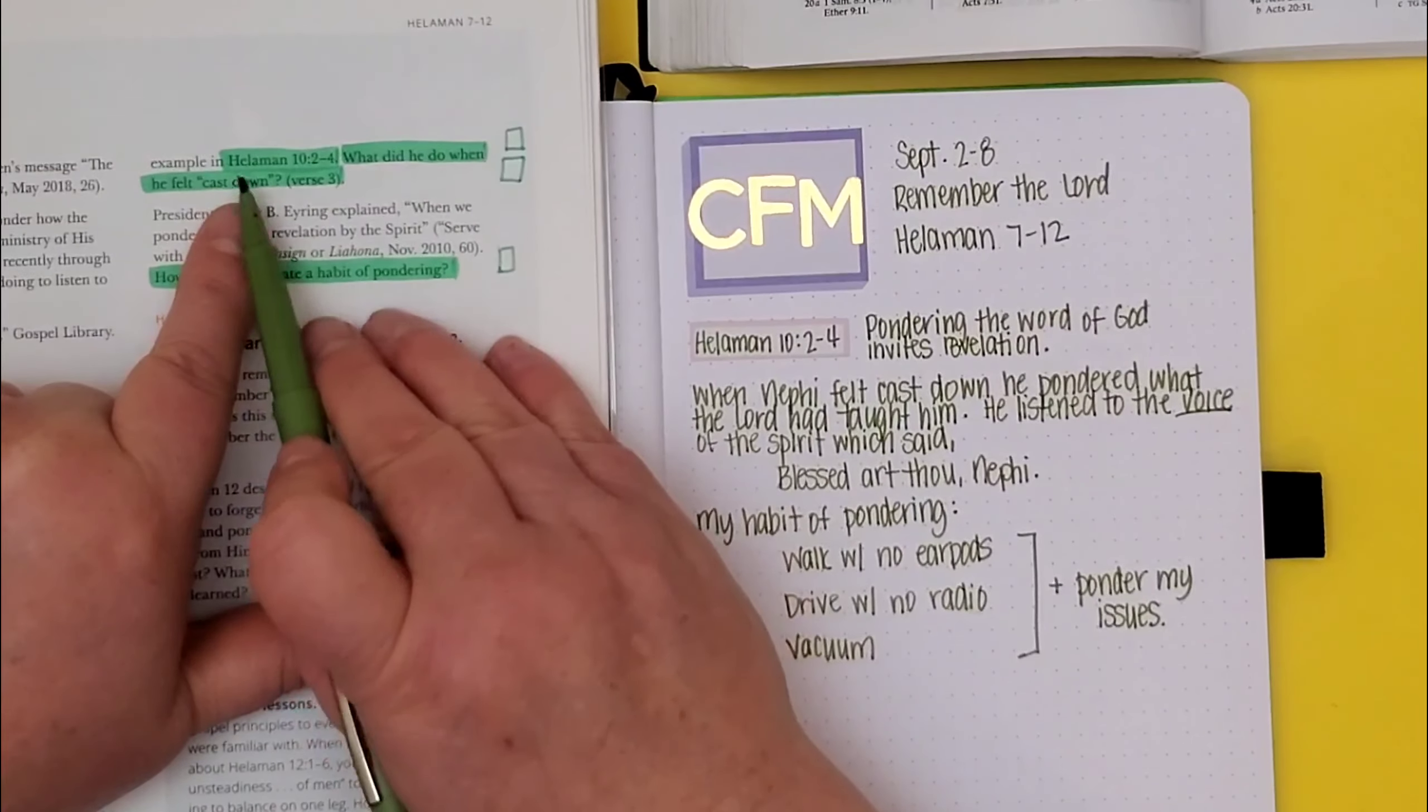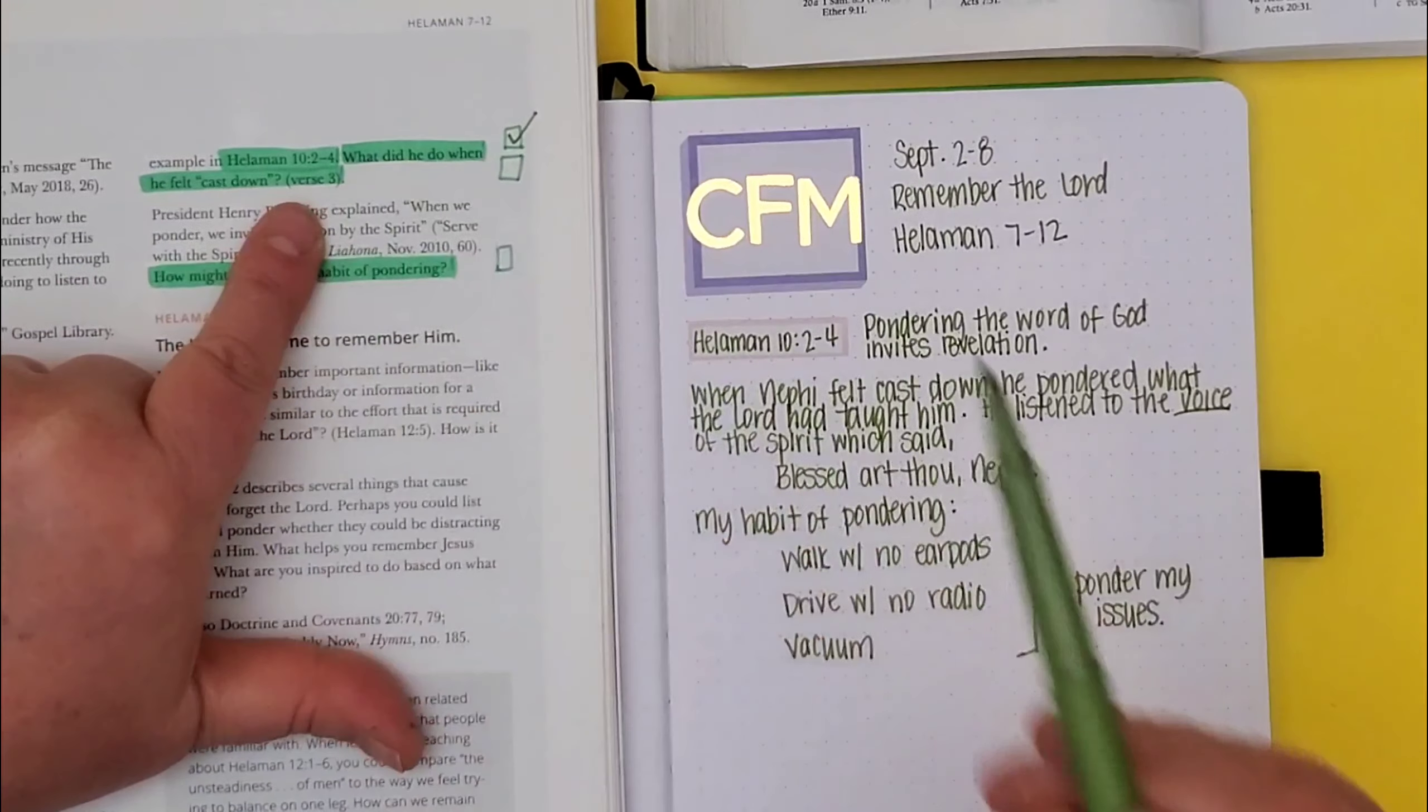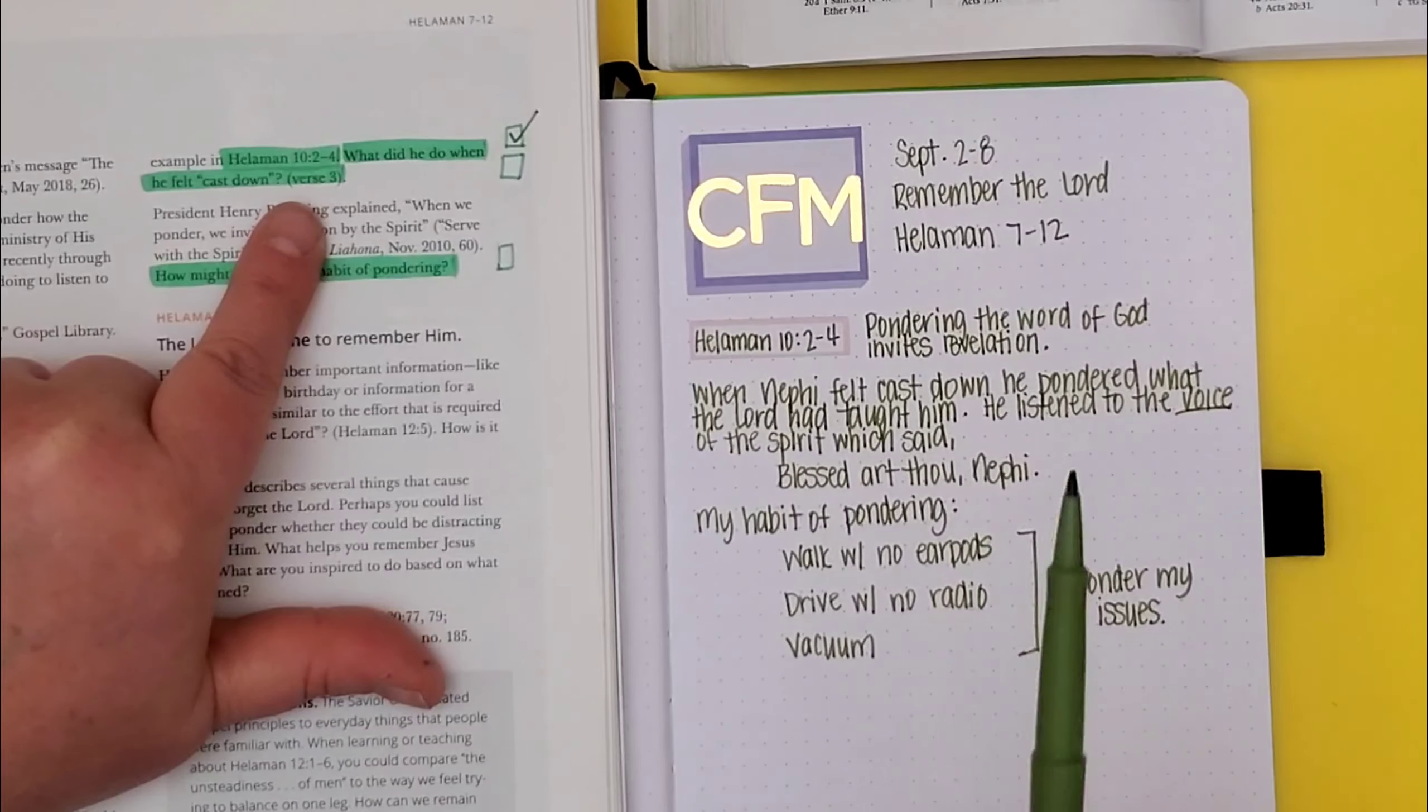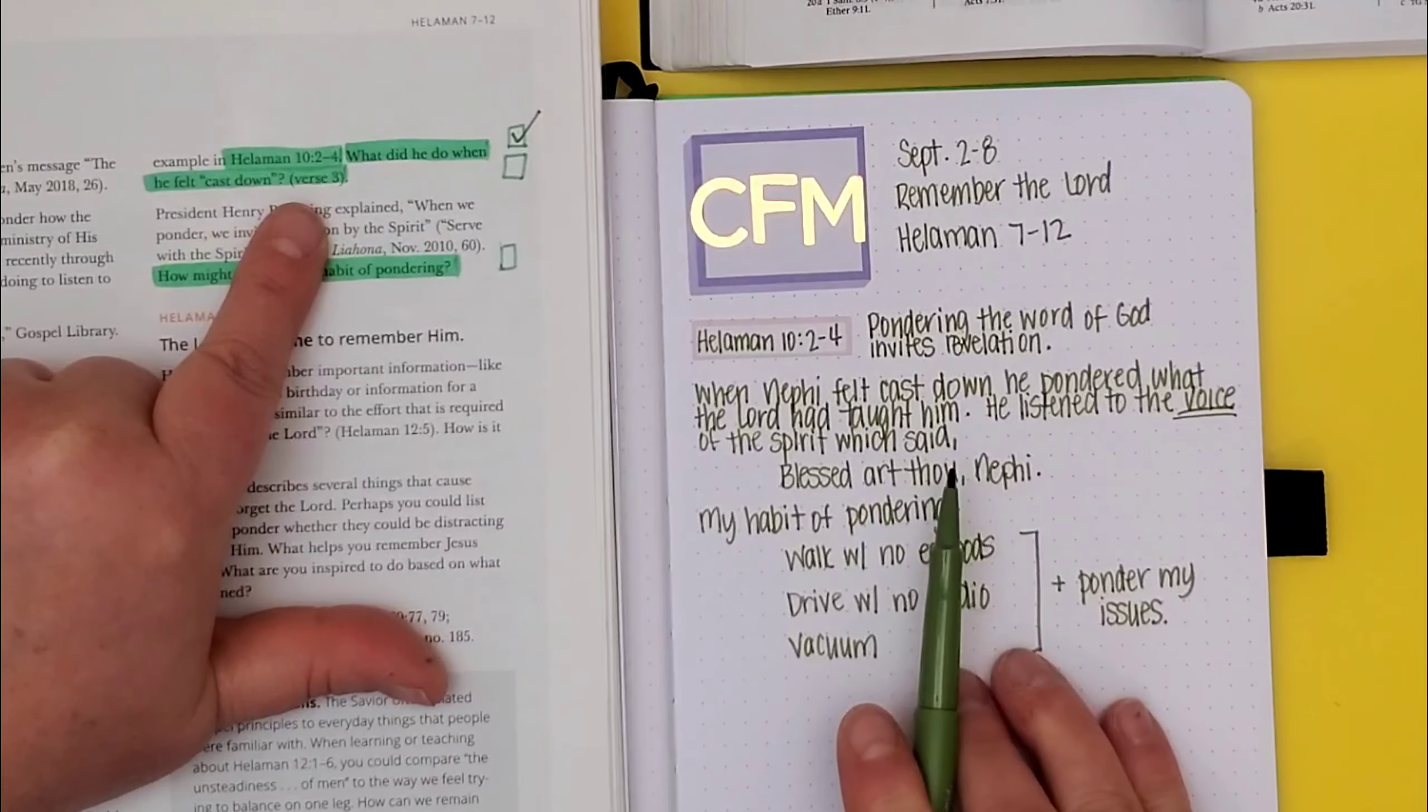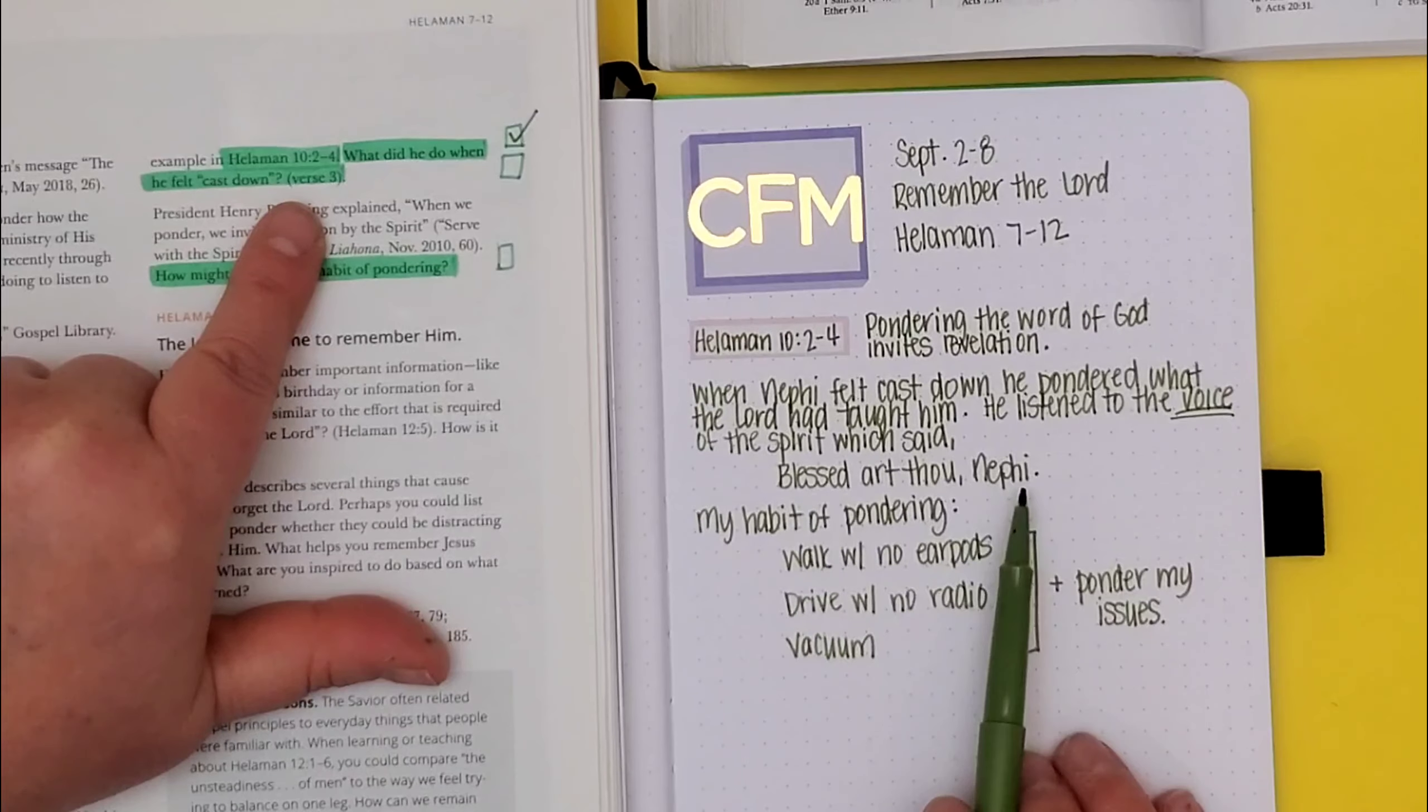I'm going to take my checklist. I read Helaman 10, two to four, check. What did he do when he felt cast down? In verse three, I wrote, when Nephi felt cast down, he pondered what the Lord had taught him. Then he listened to the voice of the spirit. I love that. It is a voice that will come into our minds as we're pondering in a quiet time. He listened to the voice of the spirit, which said, blessed art thou Nephi.